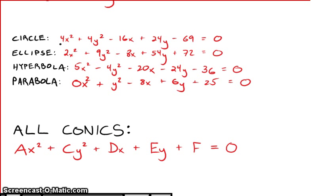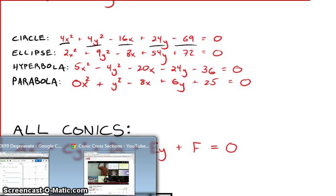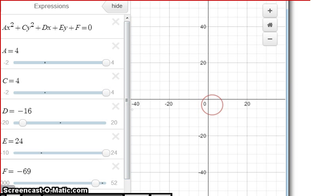The circle is made by a 4, a 4, a -16, a 24, and a -69. And if we go to the grapher, we have those coefficients right here: 4, 4, -16, 24, -69.